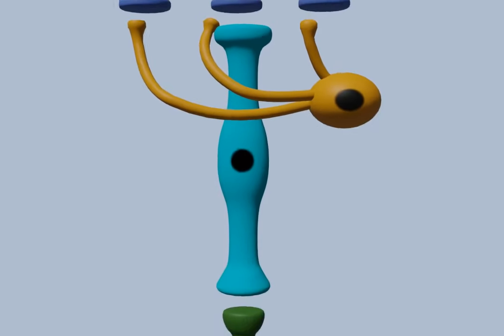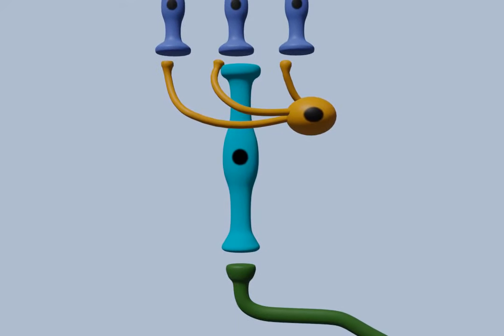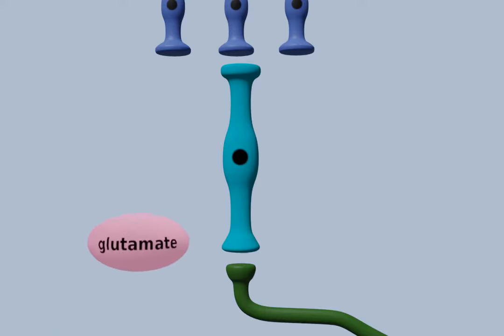The photoreceptor cells synapse with bipolar cells and horizontal cells. For now let's look at the bipolar cell. Even without stimulation from the rods, the bipolar cell will release a little bit of glutamate. This will stimulate the retinal ganglion cell, which sends signals to the brain.